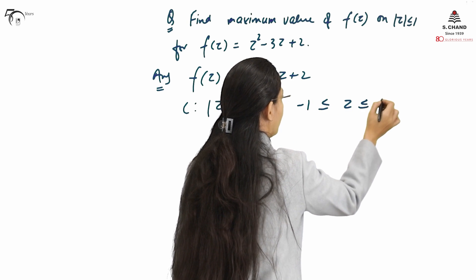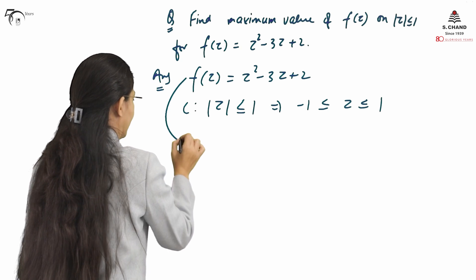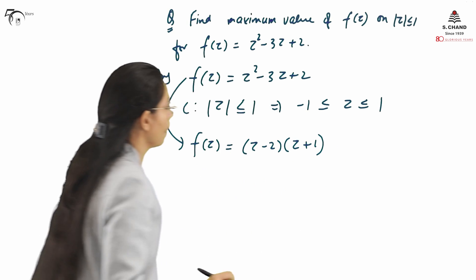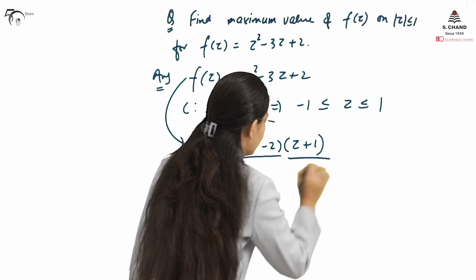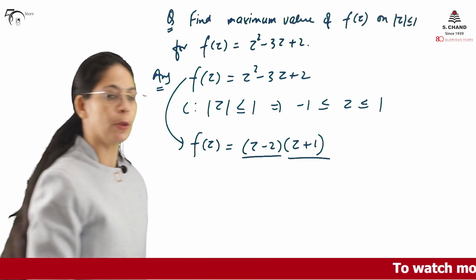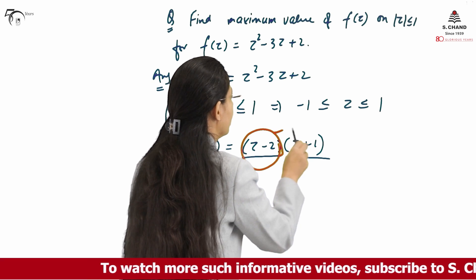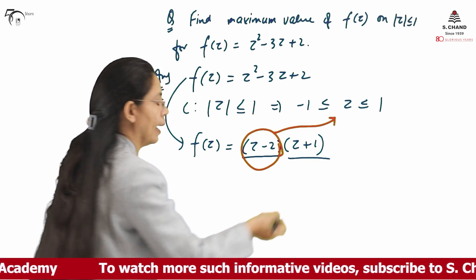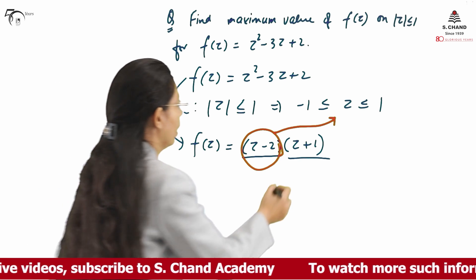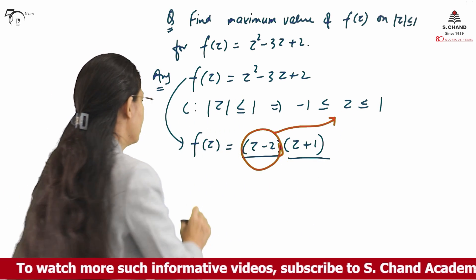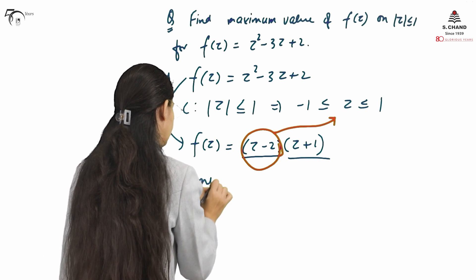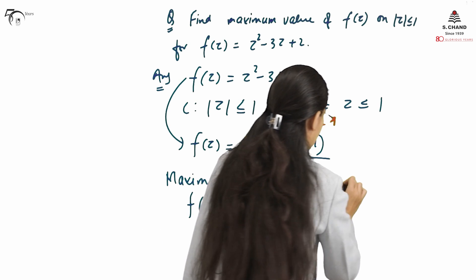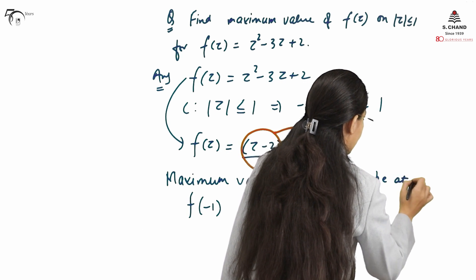We can say that z is between −1 and 1. Now we take the factorization: F(z) = (z − 2)(z + 1), giving us two values z = 2 and z = −1. Now z = 2 is not lying in or on the curve C, so we will not consider it. Therefore the maximum value of F(z) will be calculated at z = −1, because this is the point lying on the curve C.